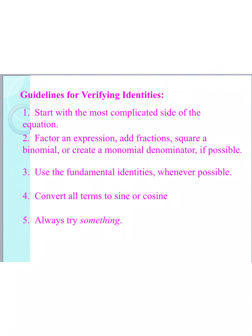Step two: some things we can think about — factoring out an expression if they have a common term, combining fractions, squaring a binomial in your denominator to try and get a single term, or somehow trying to create a binomial denominator. Step three: you want to use fundamental identities like reciprocal identities, quotient identities, and all of these essentially lead to step four — converting everything to sine or cosine.